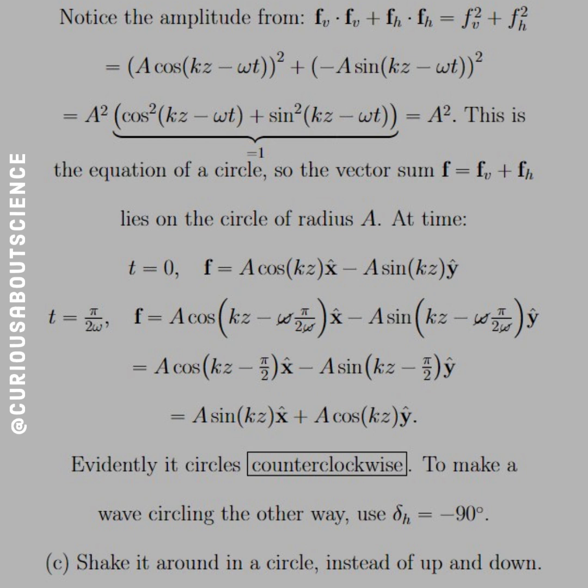So the vector sum F equal FV plus FH lies on a circle of radius A. That is fascinating. And at some time T equals 0, since that's what we're asked for, we see that F is equal to A cosine KZ X hat minus A sine KZ Y hat.